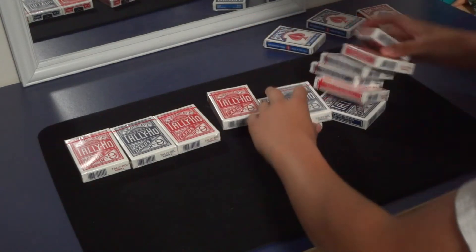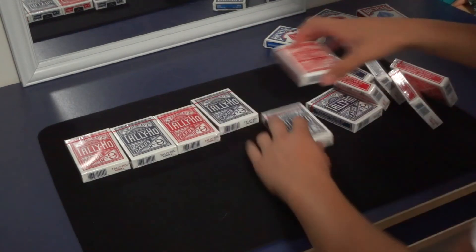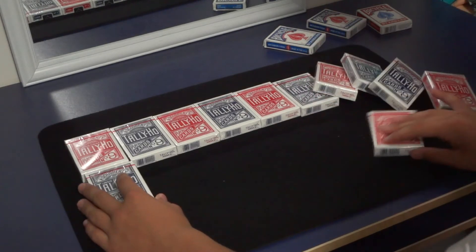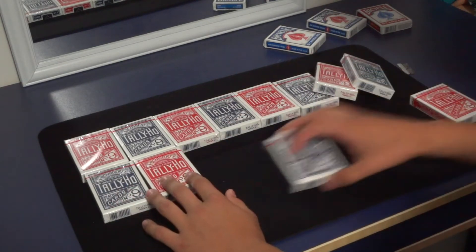12 decks of Tally Ho circle backs. These are all circle backs. Let me just organize them to make them look nice.